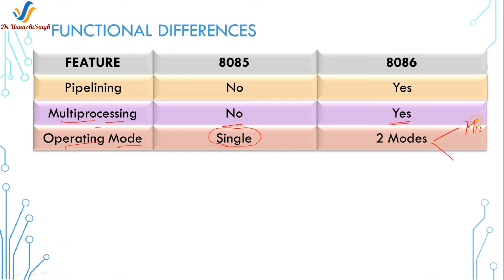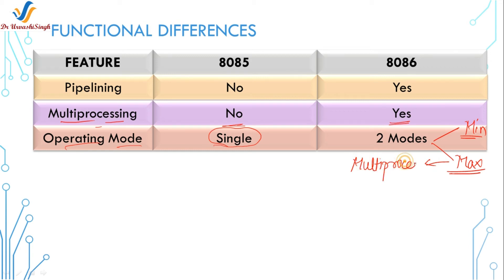The first operating mode of the 8086 is the minimum mode, where it works with its own processor alone. In the maximum mode, more than one processor works together — so in maximum mode it is doing multiprocessing.